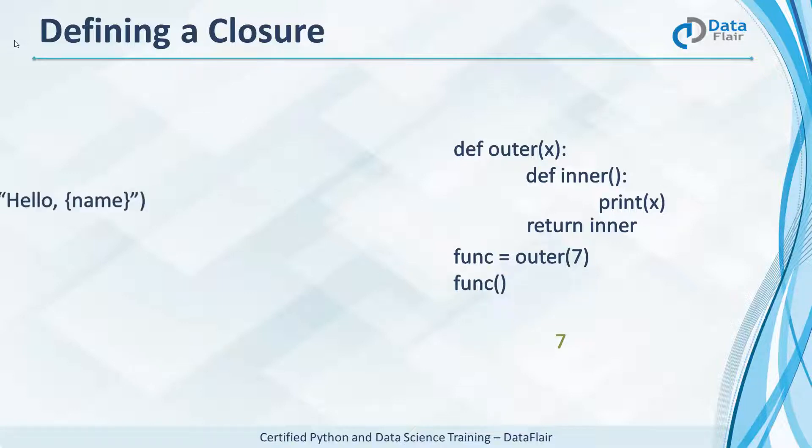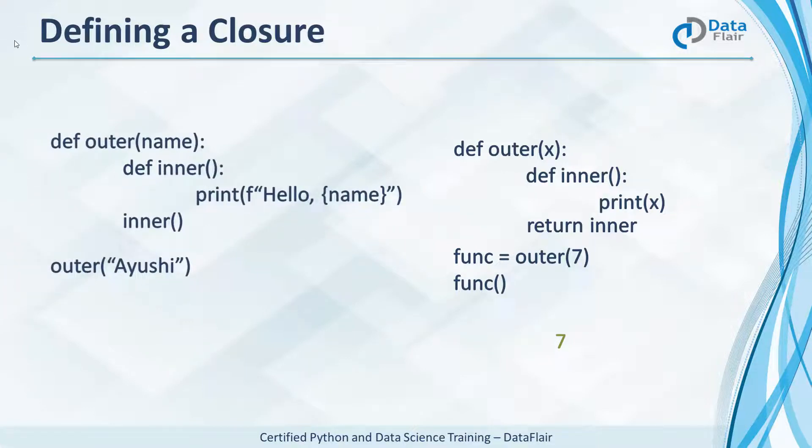Let's compare it to our previous code. While this one had outer make a call to inner, this new one has it return it instead. Now when we say func is outer of 7, we are done executing outer and we have stored its value in the name func.